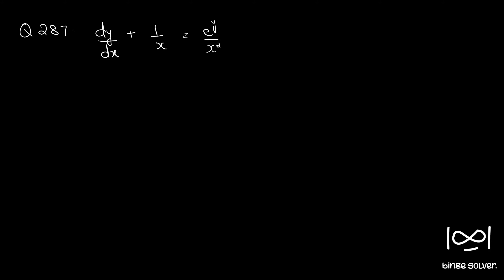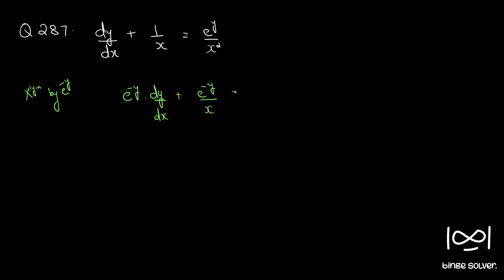Question number 287: dy/dx plus 1/x is equal to e raised to y, multiplied by x squared. Multiplying throughout by e raised to minus y, we have e raised to minus y into dy/dx plus e raised to minus y divided by x is equal to 1 by x squared.